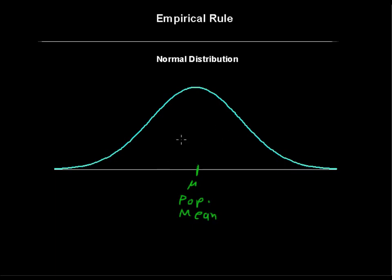And then it has a certain spread depending on how big or small the standard deviation is. We denote the population standard deviation with the Greek letter sigma, that's a small letter sigma. So I'll write population standard deviation.